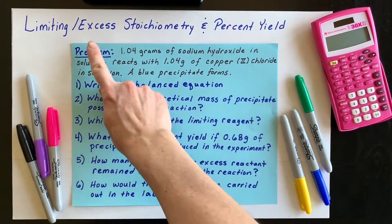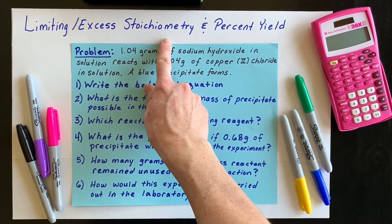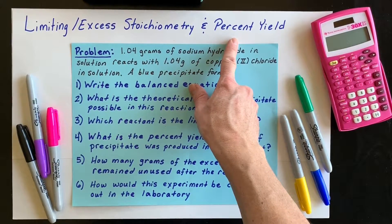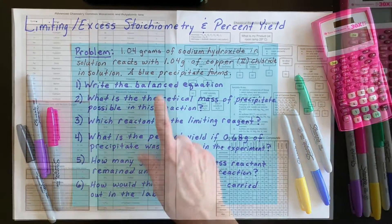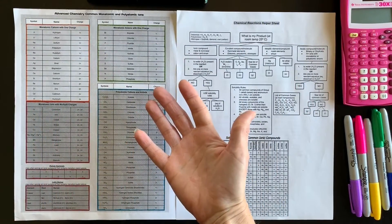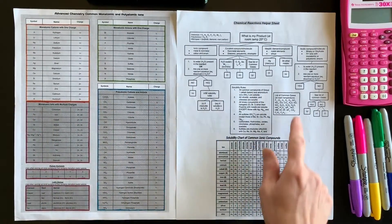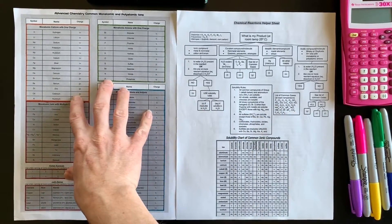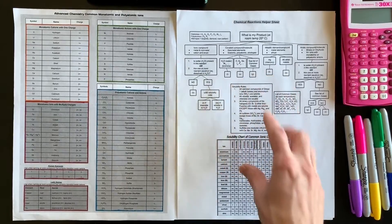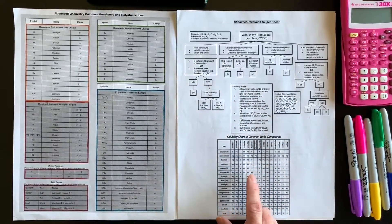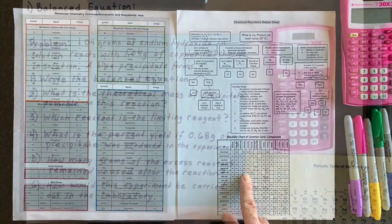Hello, chemistry students. We're going to calculate a limiting and excess stoichiometry problem and the percent yield, as well as these six things. In order to write the correct reactants and products as well as their predicted states of matter, make sure you have an ion sheet or your ions memorized. You also need a way to predict the state of matter of your products — that includes solubility rules or a solubility chart.